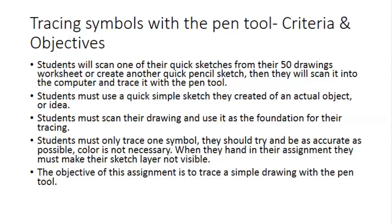This assignment is pretty straightforward. You're going to take your worksheet where you do 50 simple symbols, and you're going to trace one of them with the pen tool. To scan it, I'll show you that in class — I'm not going to make a video of that, but it's pretty straightforward. Just put it on the glass, put your flash drive into the scanner, and then scan it as a JPEG.